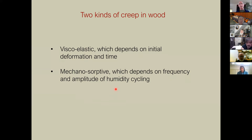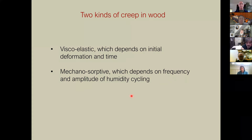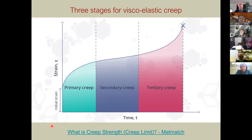There are two kinds of creep in wood. Viscoelastic creep depends on the initial deformation, time, and temperature. Mechanosorptive creep — which I had never heard of — depends on frequency and amplitude of humidity cycling only. Whereas viscoelastic creep takes a quantifiable amount of time, mechanosorptive creep can proceed very quickly with rapid humidity cycling. The rate of humidity cycling also depends on the dimensions of the object, since humidity must penetrate through — a thin violin top saturates more quickly than a thick beam.